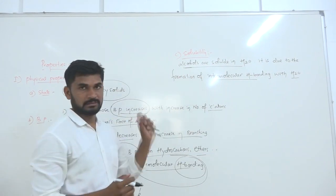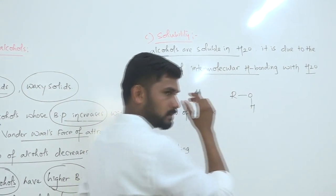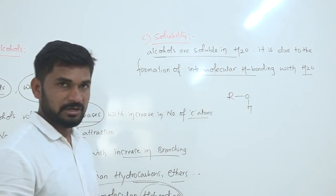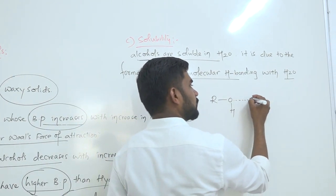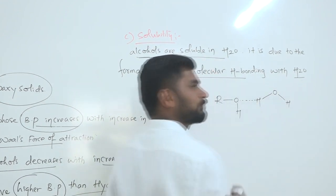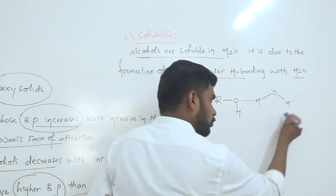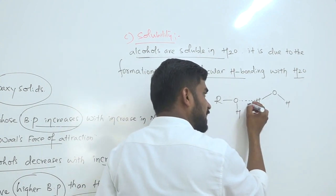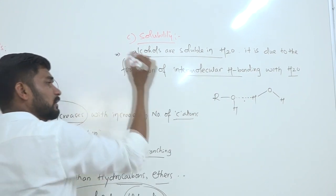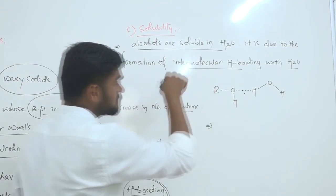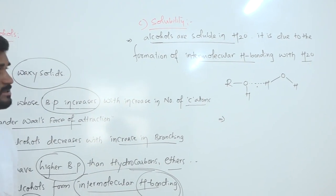The solubility of alcohols decreases in water with increase in the number of carbon atoms. For example, CH3OH can form hydrogen bonding with water very easily and is soluble in water. However, if we take an alcohol with more carbon atoms, such as hexanol with 6 carbon atoms, the increase in carbon atoms decreases the solubility of alcohols in water.